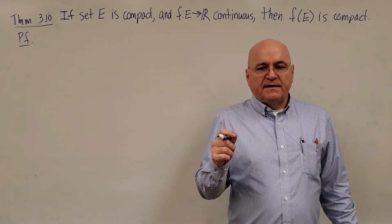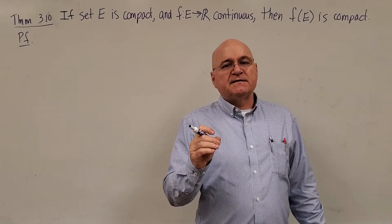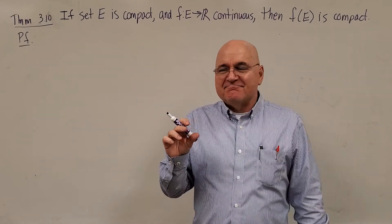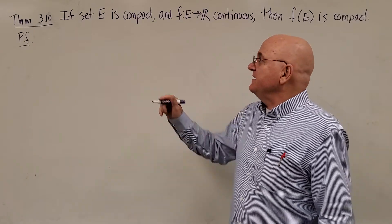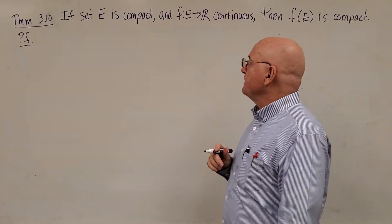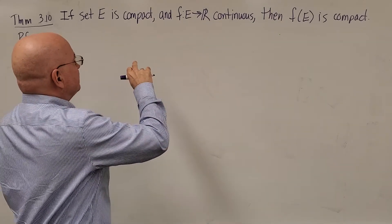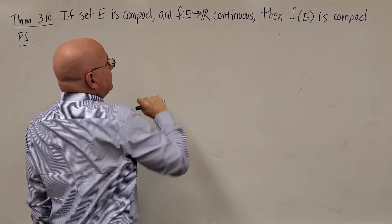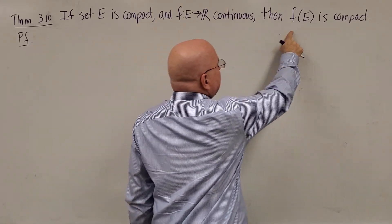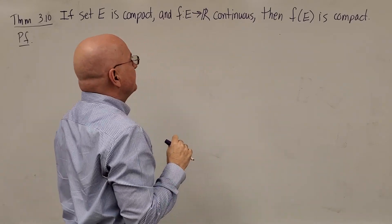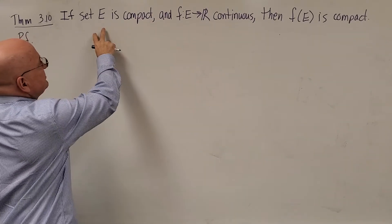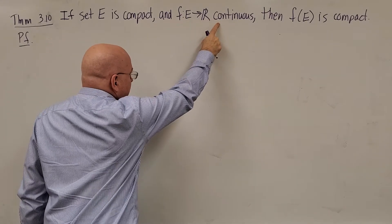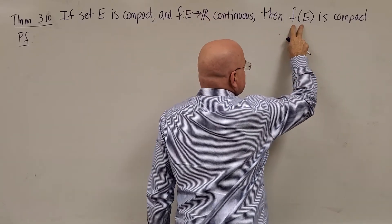As mentioned earlier, I'm going to prove that the continuous image of a compact set is itself compact. More formally, it's Theorem 3.10: if E is a compact set and the domain of a function F that is continuous, then F(E) is compact. The continuous image means you're taking the image of E under the continuous function F.